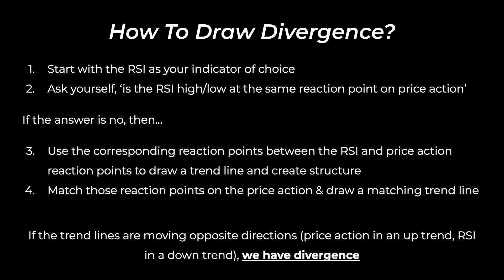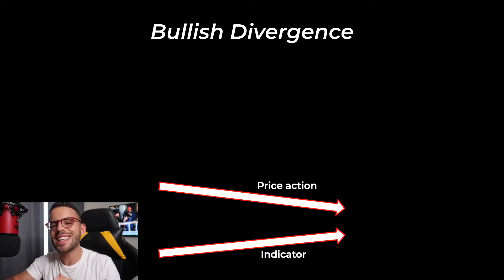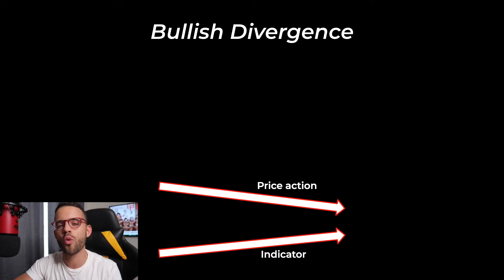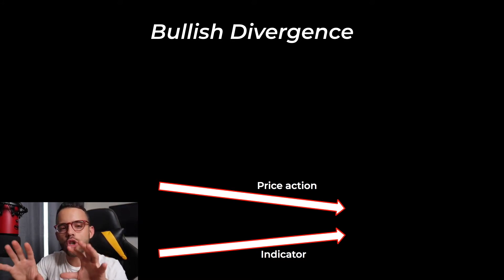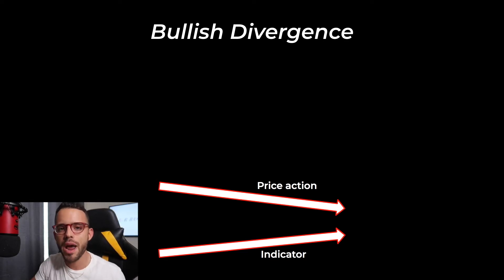How? Like I said, if price action is moving one way and the RSI is moving the opposite way, that divergence — that difference, because they're not in agreement — creates divergence. There are two main types of major divergence. There's also hidden divergence, but we're not going to worry about that. It has no impact on the way we're trading today, so we're just focused on the two main types: bullish divergence and bearish divergence.